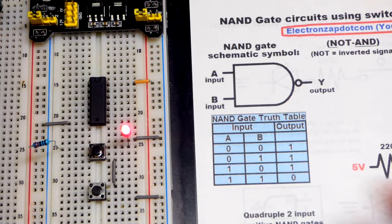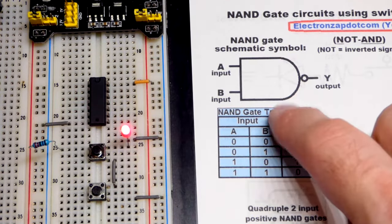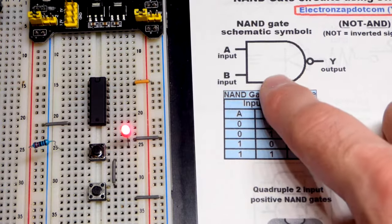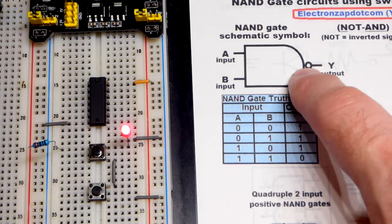So now in this video we're going to look at the NAND gate and this is the schematic symbol for a NAND gate.